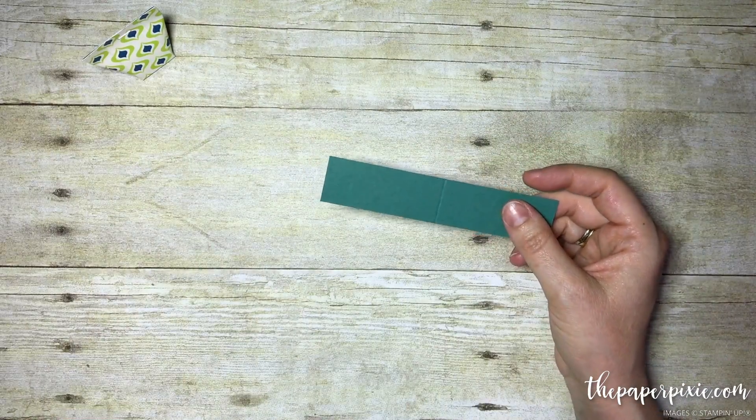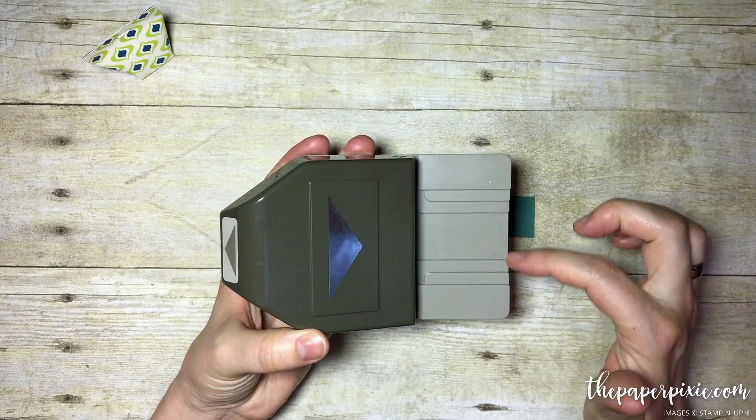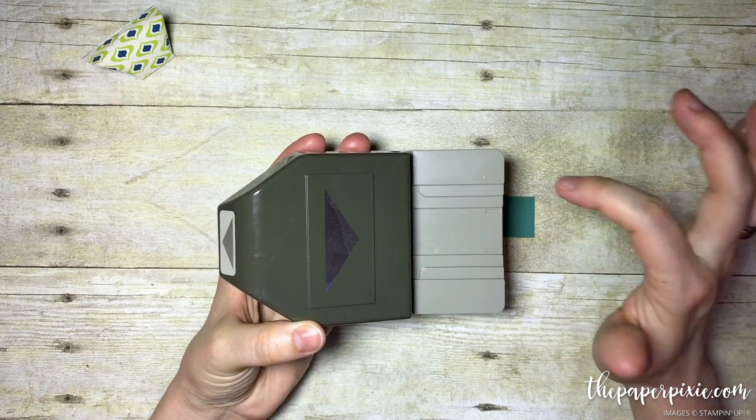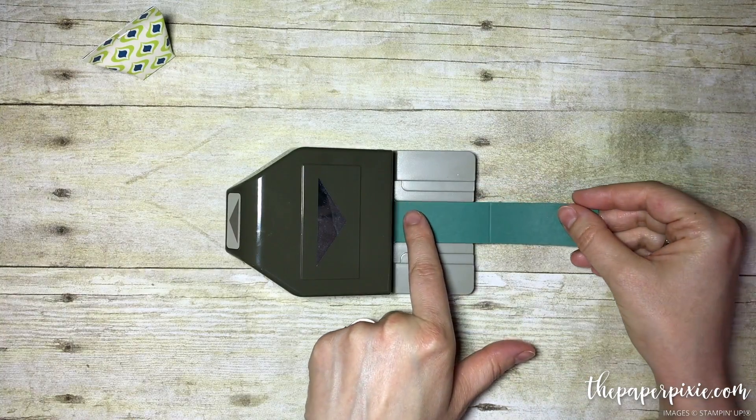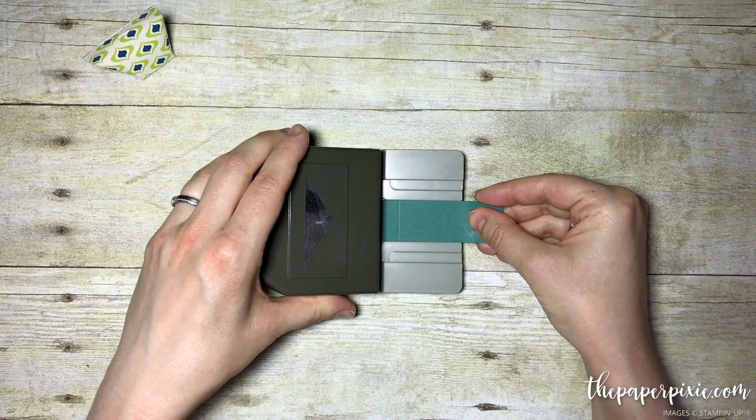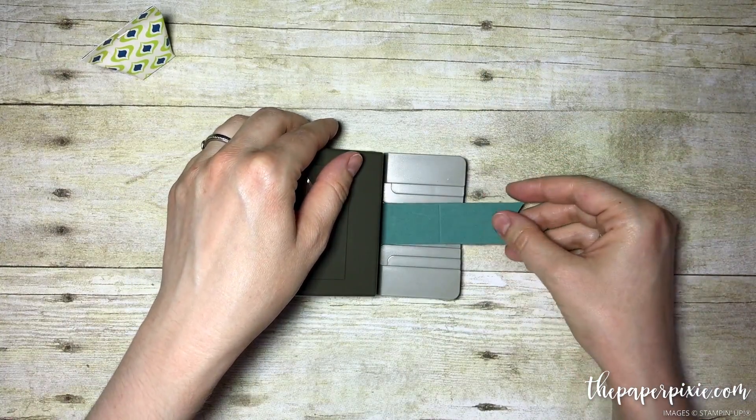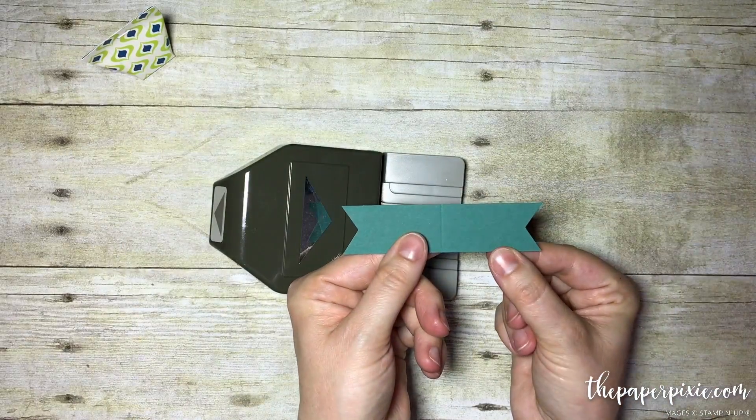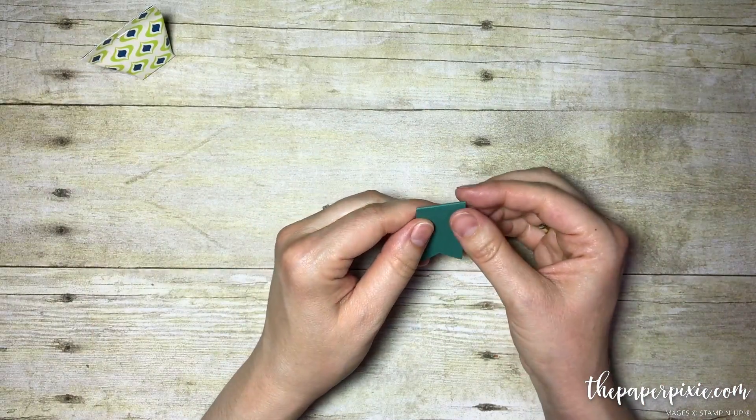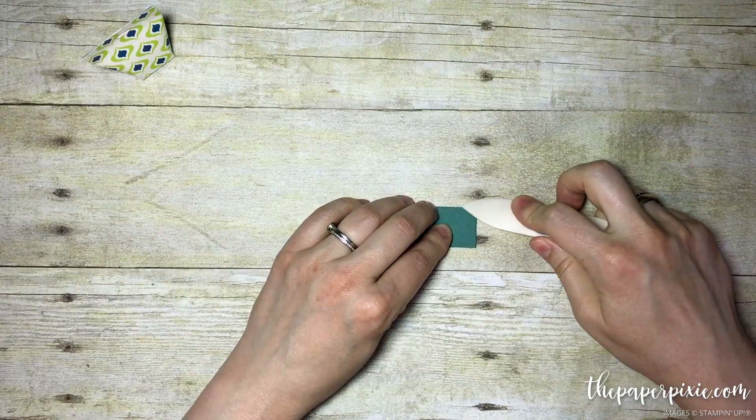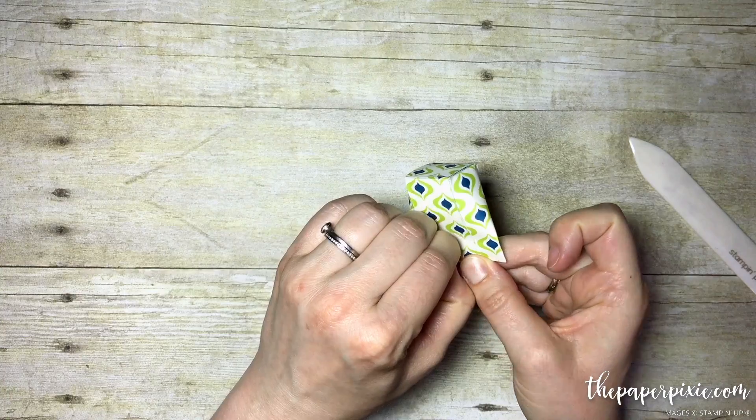Before I fold and burnish, I'm going to use our banner triple punch. It's called a triple banner punch because you can make banners for 1 inch, 1.5 inch, or 2 inches. It has this little guide here. I can slide my 1 inch piece till it stops and punch, then turn it around and do the other side. I love those little banner ends.